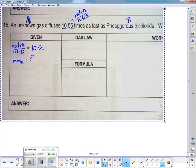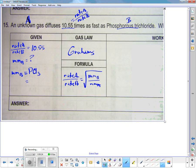I'm going to change colors so I can see it. That's my A. This right here equals rate A divided by rate B, 10.55. This is my B, phosphorus trichloride. My molecular mass A, I don't know, I'm trying to find that. My molecular mass B is three chlorines and one phosphorus.